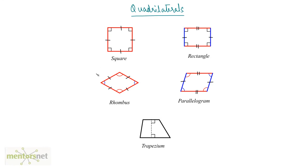Hello everyone. What is a quadrilateral? A quadrilateral is a closed figure with four sides. In this video we are going to look at what are the various types of quadrilaterals and the formulas to calculate the areas of respective quadrilaterals. So let us first look at what are the various types of common quadrilaterals.